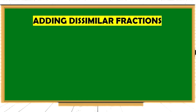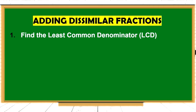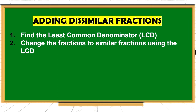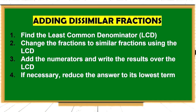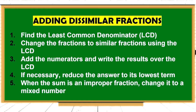Moving on to adding dissimilar fractions. First, we must find the least common denominator or LCD. Second, change the fractions to similar fractions using the LCD. Third, add the numerators and write the results over the LCD. Fourth, if necessary, reduce the answer to its lowest term. And fifth, when the sum is an improper fraction, change it to a mixed number.